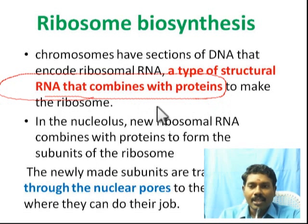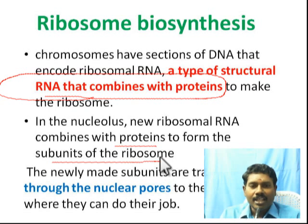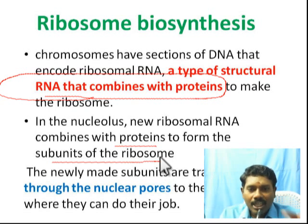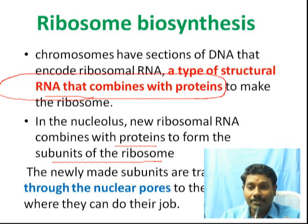Now, the newly formed ribosome combines with protein to form subunits — larger subunits and smaller subunits. In eukaryotes, the ribosome synthesis occurs in the nucleolus, whereas in prokaryotes, the ribosome synthesis occurs in the cytoplasm only.